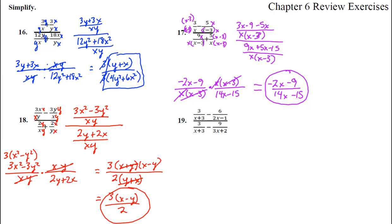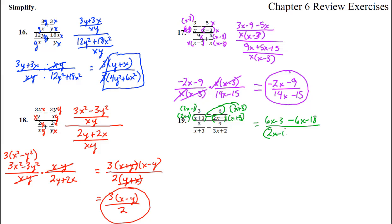The final one, number 19 — this one looks tougher with varied denominators. On the top, we'd have to times by x plus 3 and 2x minus 1. So we times by 2x minus 1 and 2x minus 1 there, and times by x plus 3 and x plus 3 here. 3 times 2x minus 1 is 6x minus 3. And then this negative 6 gives minus 6x minus 18, all over 2x minus 1 times x plus 3.